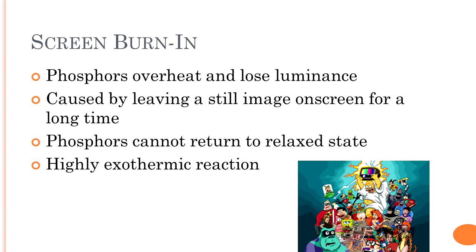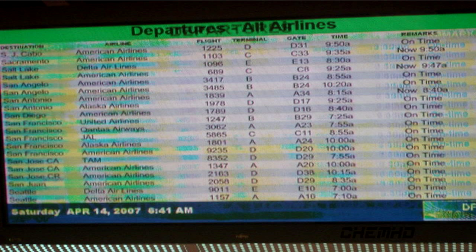A major problem with plasma is screen burning. This issue occurs when a still image is left on the screen for an extended period of time. This causes the phosphors to overheat and enter a permanent excited state, which makes them lose their luminance. The phosphors cannot return to their normal state, which is why the image is left on the screen. This process is a highly exothermic reaction which releases a lot of heat. For example, the plasma screen at the airport is on every day, constantly displaying still images for a long period of time, causing screen burning, so you can actually see the previous images which could not be removed.